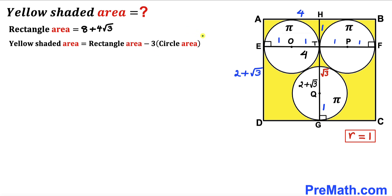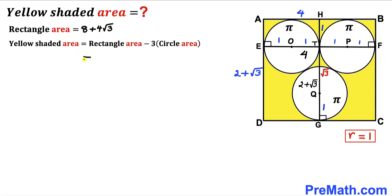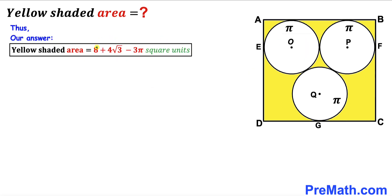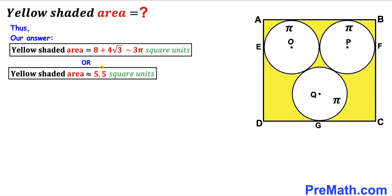For the final step, recalling our equation: yellow shaded area = rectangle ABCD area − 3 × circle area. Substituting, we get (8 + 4√3) − 3 × π. So the area of the yellow shaded region is 8 + 4√3 − 3π square units, which is approximately equal to 5.5 square units.